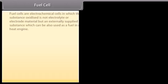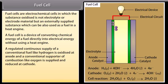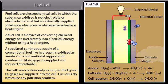Fuel cell. Fuel cells are electrochemical cells in which the substance oxidized is not electrolyte or electrode material but an externally supplied substance which can also be used as a fuel in a heat engine. A fuel cell is a device of converting chemical energy of a fuel directly into electrical energy without using a heat engine. A regulated continuous supply of a conventional fuel like hydrogen is oxidized at anode, and a conventional supporter of combustion like oxygen is supplied and reduced at cathode. The cell runs continuously as long as the hydrogen and oxygen gases are supplied into the cell. Fuel cells do not cause any pollution problem.